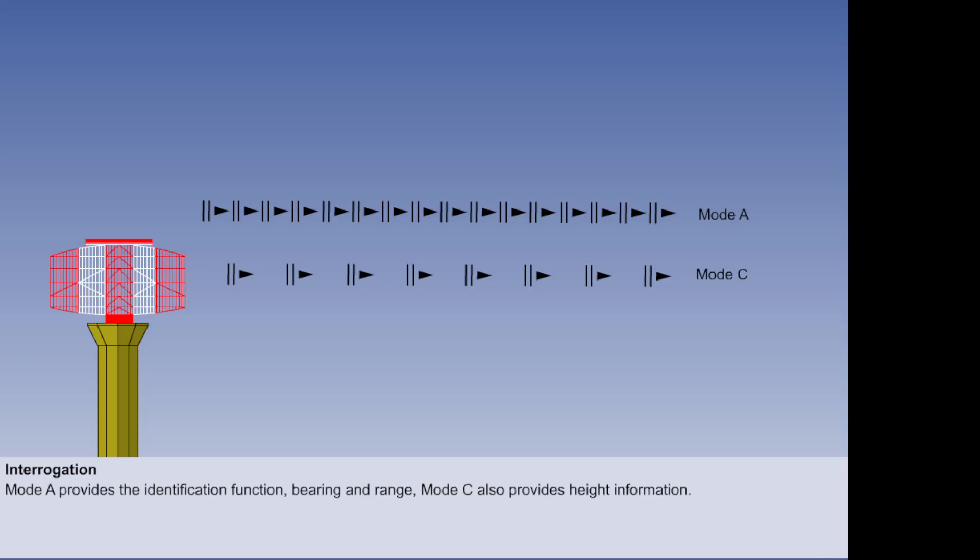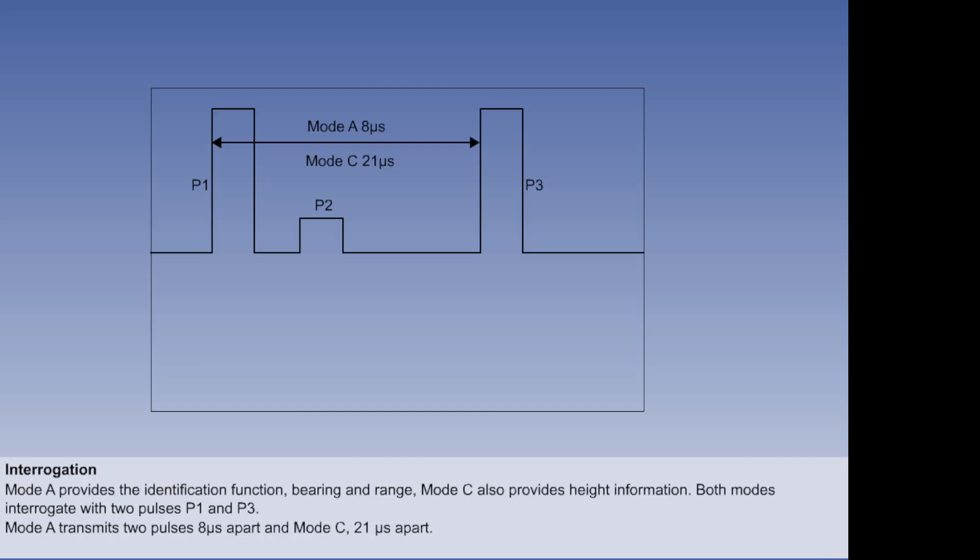Of the current modes, mode alpha provides the identification function, bearing and range, whilst mode Charlie provides height information. The interrogation comprises a series of pulses. The mode of interrogation is dictated by the spacing between the first and third pulses, P1 and P3. For a mode alpha interrogation, the spacing is 8 microseconds. For mode Charlie, the spacing is 21 microseconds. This enables the aircraft to reply with the correct information.